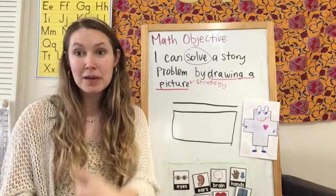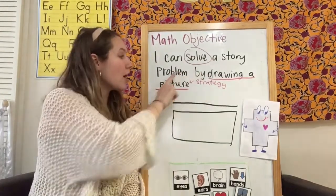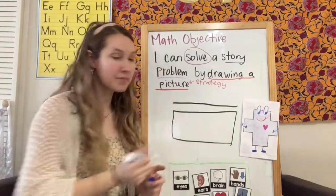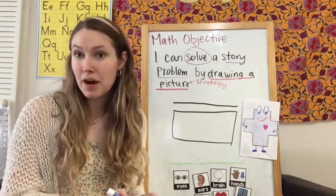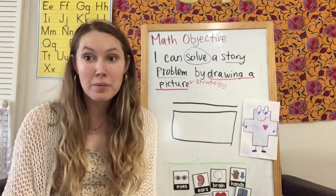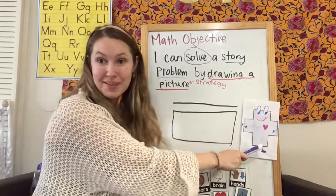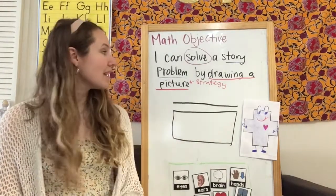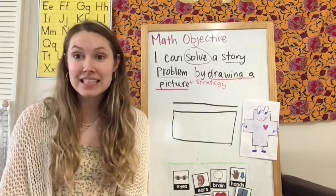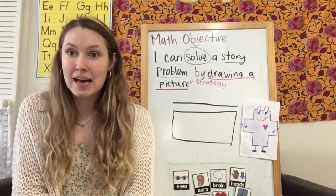So basically today we're still going to be writing our number sentence for our story problems. I'm going to go ahead and underline that one in blue. We've been hearing story problems where I tell you the story and you have to find what we're adding up using Gus the Plus to help us find the answer. And I underlined by drawing a picture.